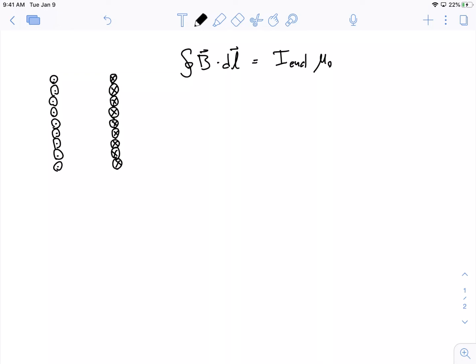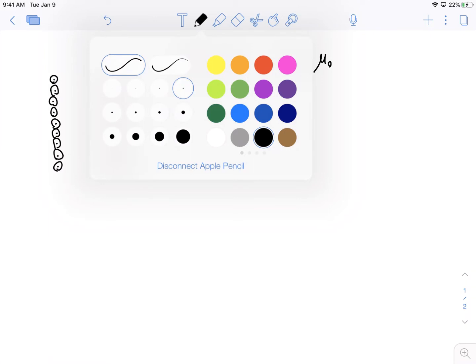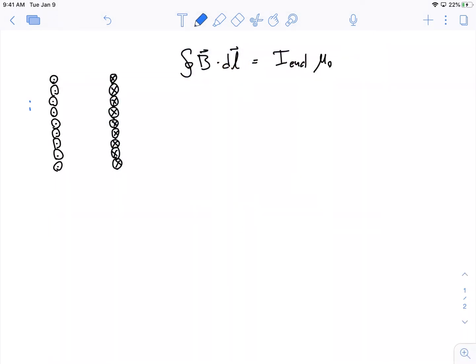So what I'm going to do is, the loop I'm going to pick is going to be the loop that actually encloses a bunch of current. And I'm going to make the path go this way, just for the heck of it.